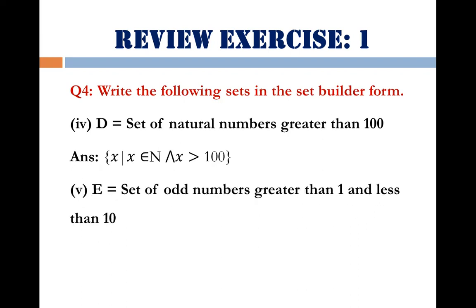Part 5: E = set of odd numbers greater than 1 and less than 10. The answer in set builder form is: E = {x | x ∈ O and 1 < x < 10}. We can also say x > 1 and x < 10. This completes the solution of question number 4. Hope you understand.